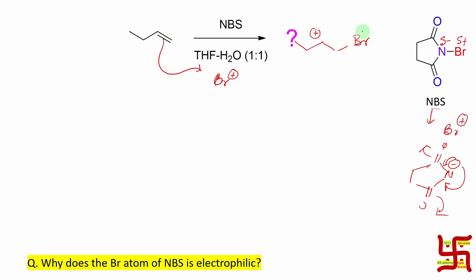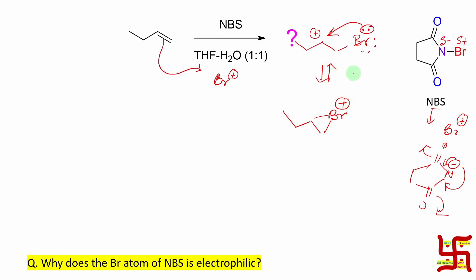This carbocation intermediate is not stable as a free carbocation. What can happen is that bromine can stabilize this positive charge to some extent by donating its lone pair and forming a three-membered cyclic intermediate, which is called the bridged bromonium ion. However, this bridged bromonium ion is not that stable, so you can expect an equilibration between the carbocation and the bromonium ion.